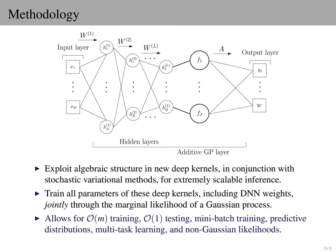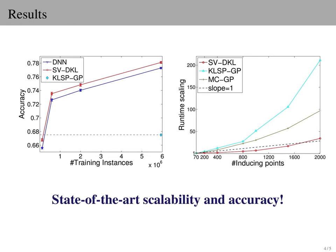This is a very general framework. The experimental results show state-of-the-art performance in terms of both scalability and accuracy. This work can be thought of as a plug-in to any given deep neural network architecture, with a modest additional runtime overhead in exchange for advantages in predictive performance, interpretability, and full predictive distributions for characterizing uncertainty, which is often just as important as the point predictions.